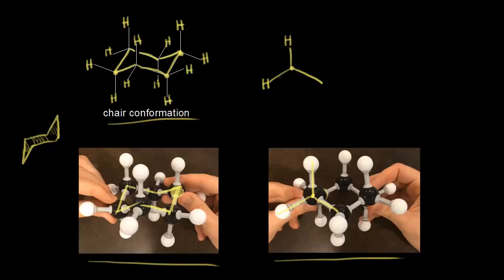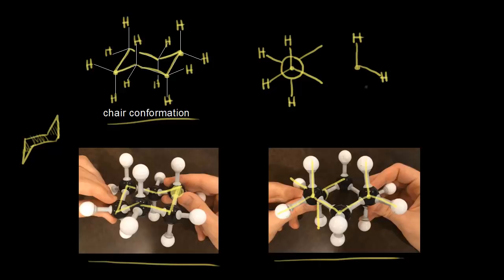The front carbon should be completely eclipsing the back carbon, so we represent that with our circle. Coming off of the back carbon, there's a hydrogen going up and to the left, a hydrogen going down, and going to the right and up we have a CH2 group. Moving over to this carbon on the right, we represent that with a point. There's a hydrogen going straight up, a hydrogen going down and to the right, and then we have this bond connecting to that CH2 group.